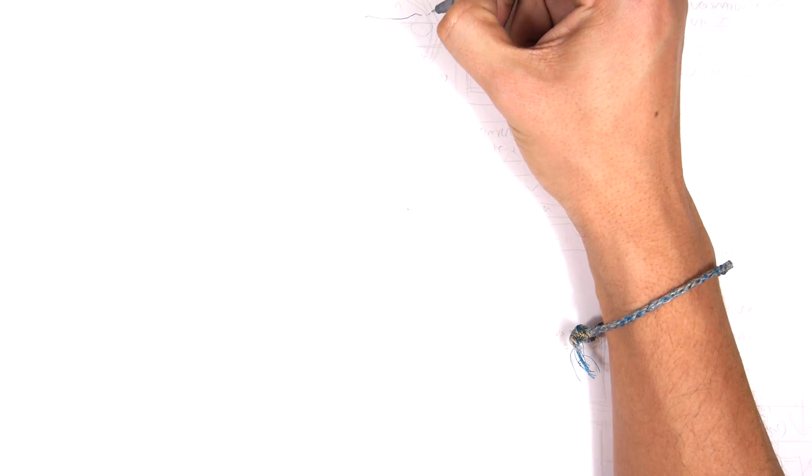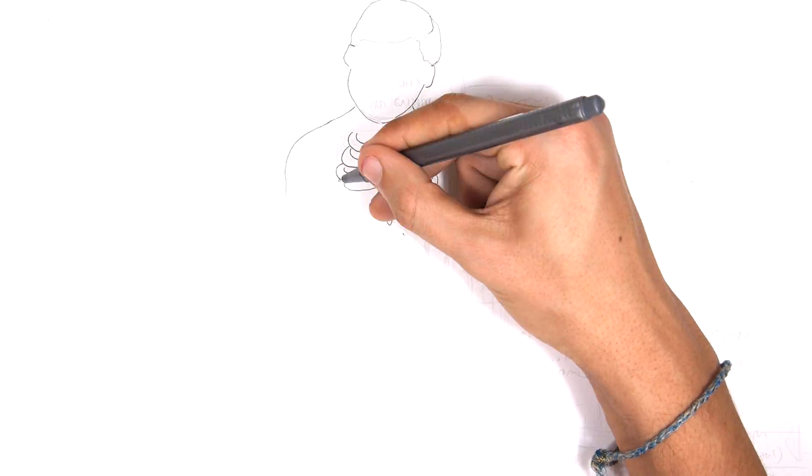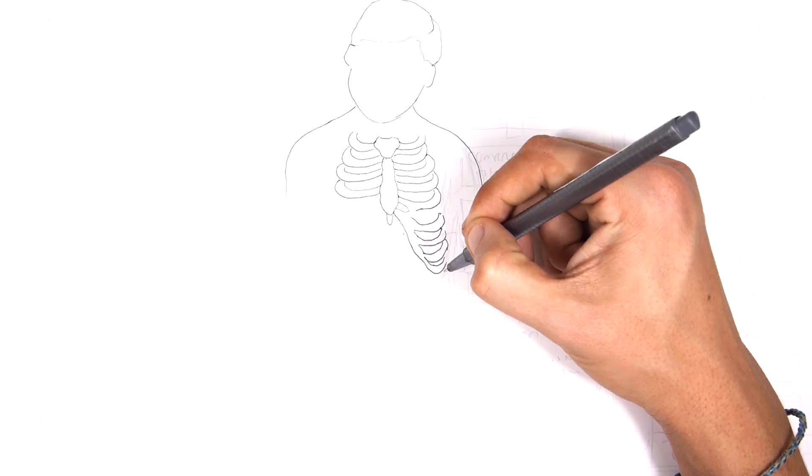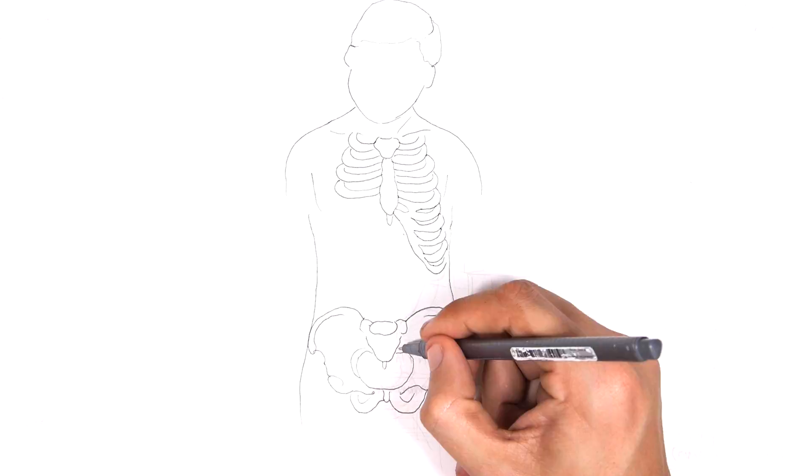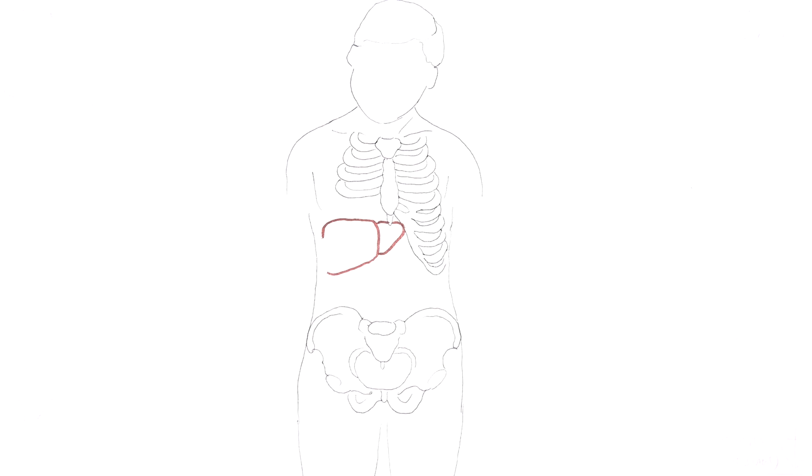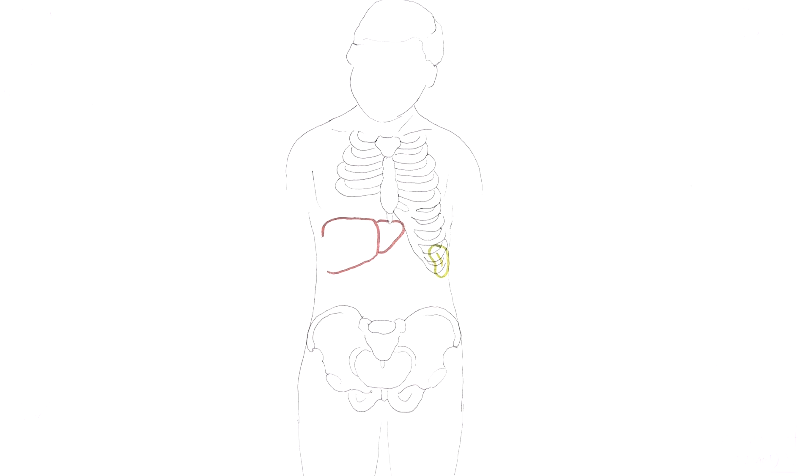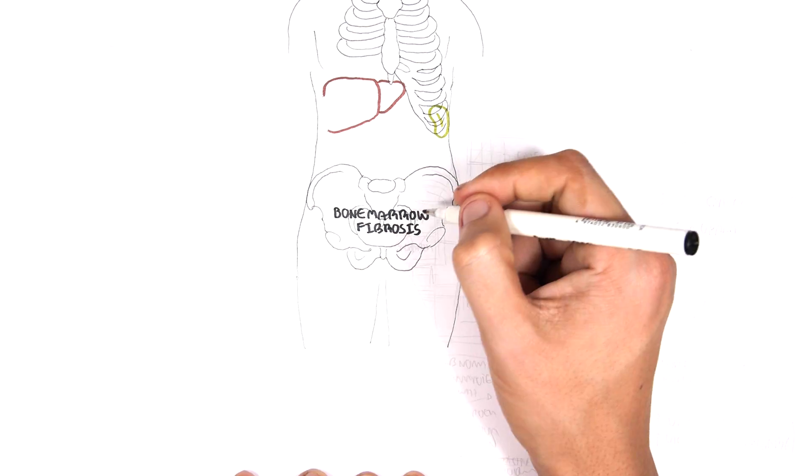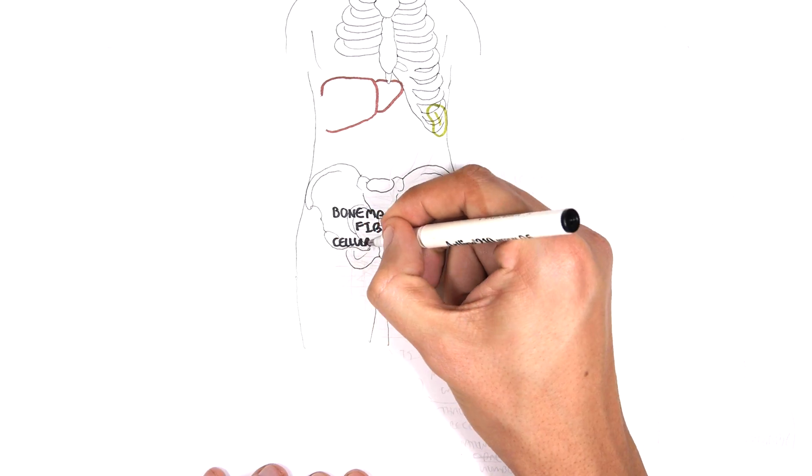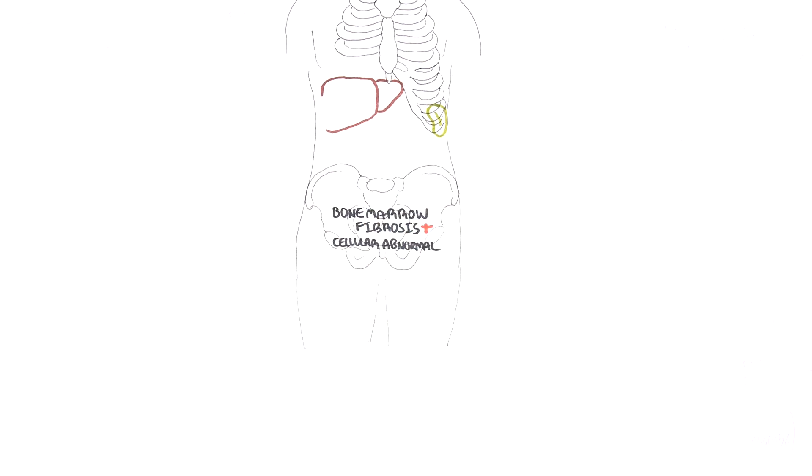Keeping these bone marrow fibrotic changes in mind, let us focus now on the pathophysiology of myelofibrosis, and it is quite an amazing story. So here is the same person who has primary myelofibrosis. Here is his liver and spleen on the left, below the diaphragm. In primary myelofibrosis, there is bone marrow fibrosis with cellular abnormalities within the bone marrow.